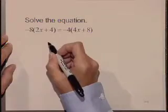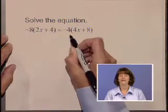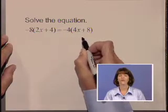Let's solve the equation. Negative 8 times the quantity 2x plus 4 is equal to negative 4 times the quantity 4x plus 8.